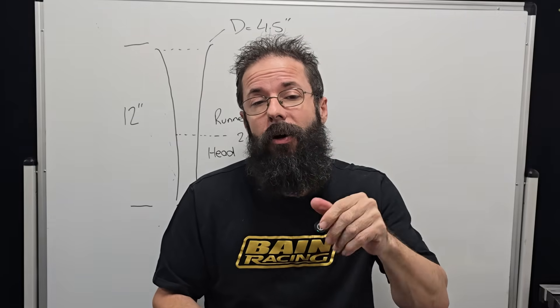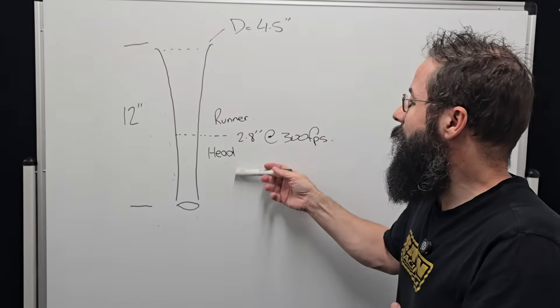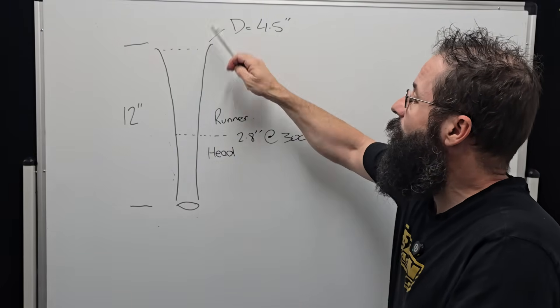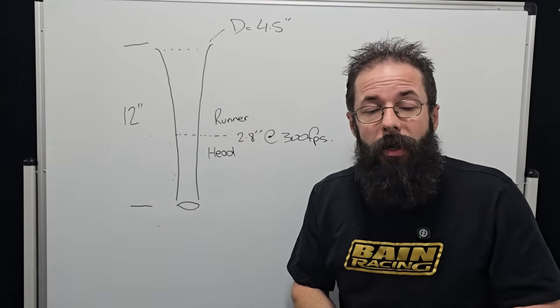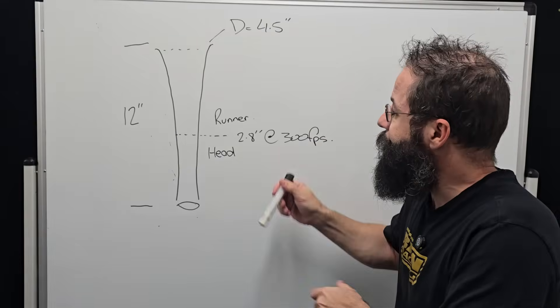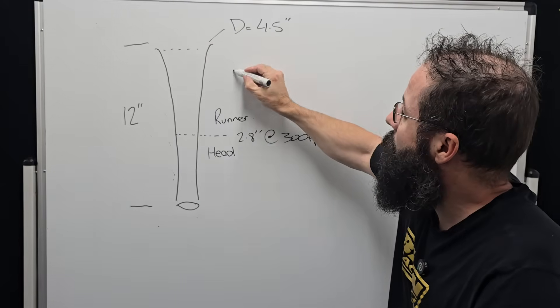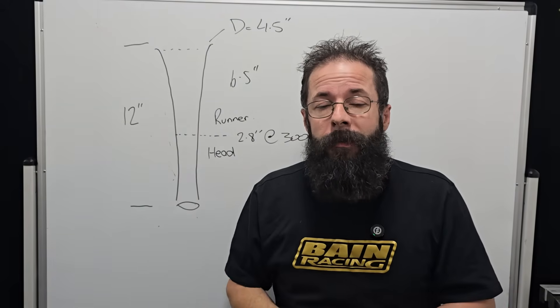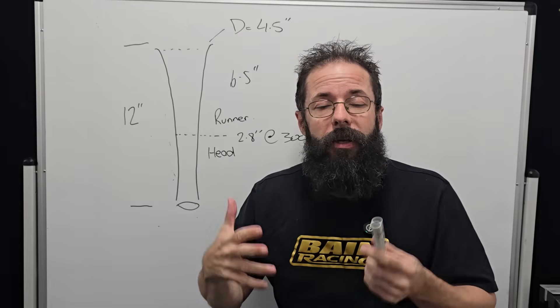Now you've got a good understanding of airspeed and the calculator. I want to talk about the runner and how we can fudge this a little. Our example is 2.8 at the window, roughly 4.5 at the top, a tapered runner with a total induction length of 12 inches — like an 8,500 RPM small block. Now, what do we do if we can only fit a 6.5 inch runner above the head? Well, there is a way to cheat it and get 90% of the results.